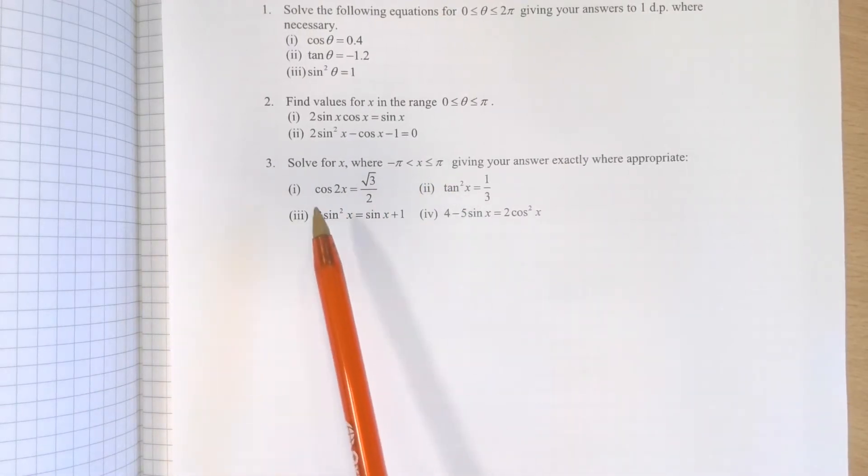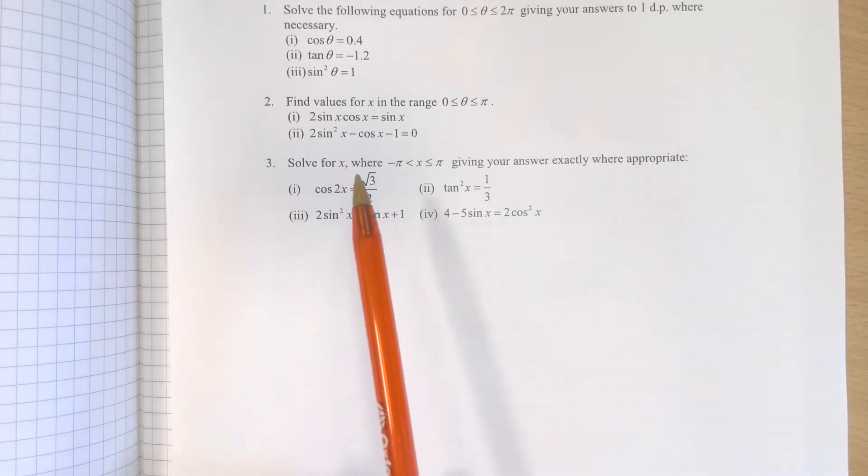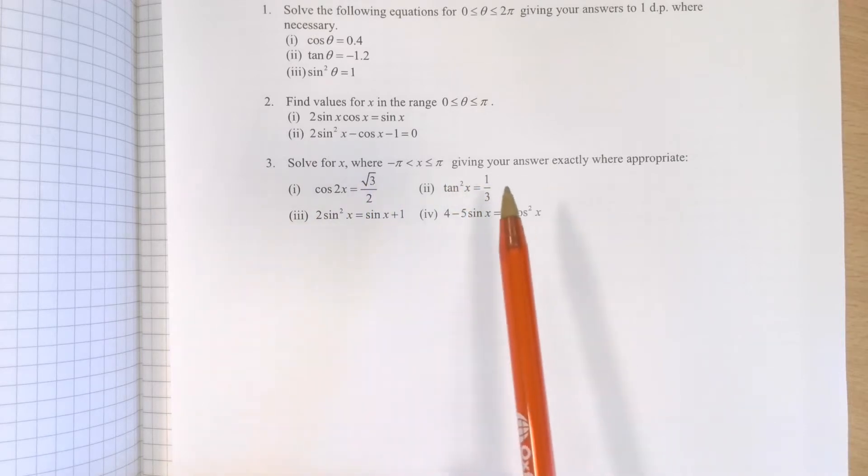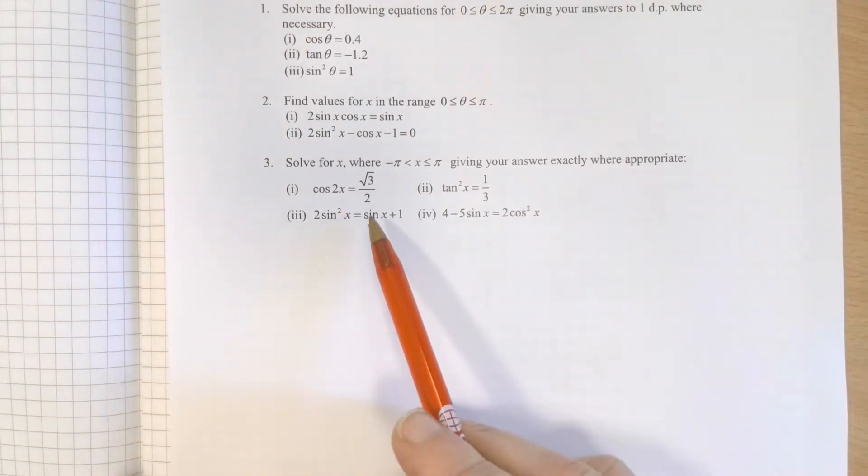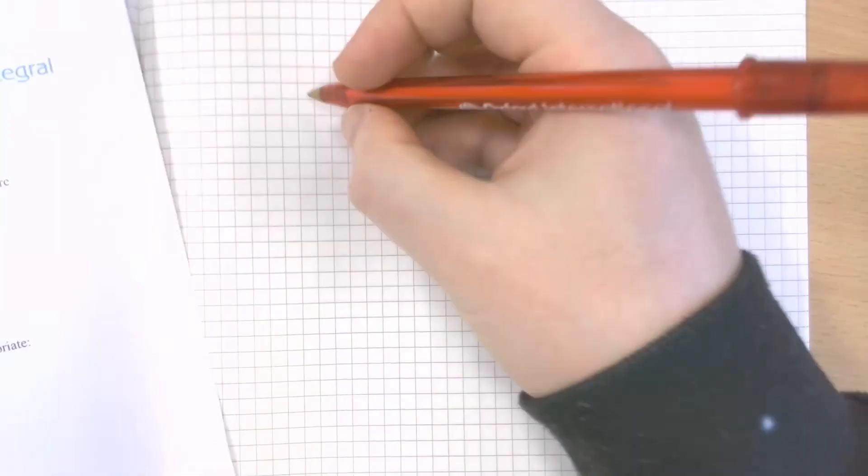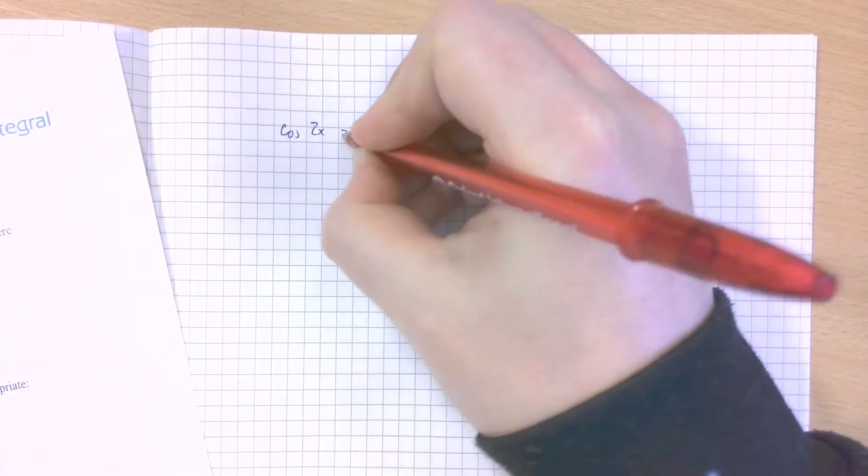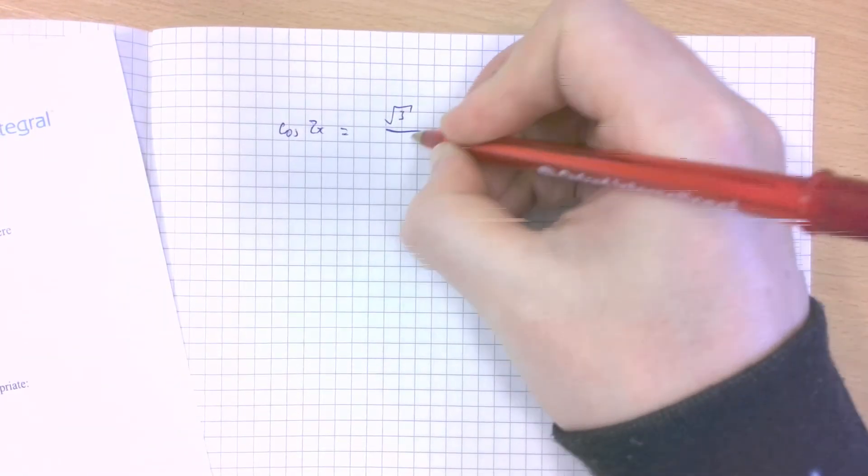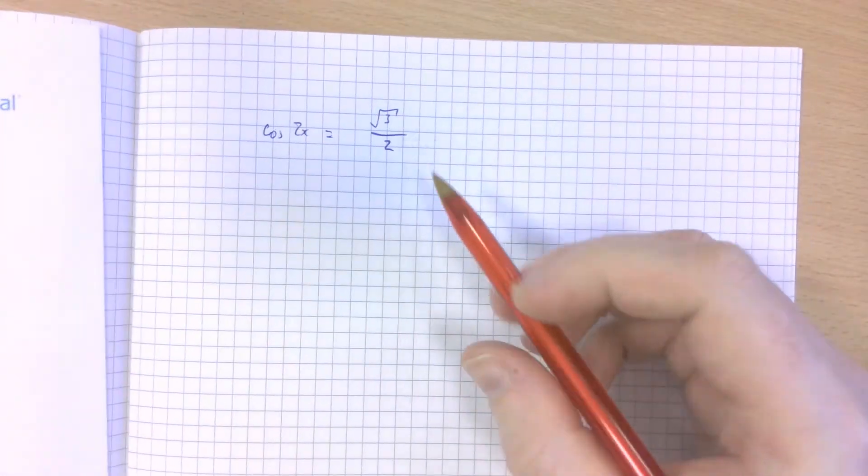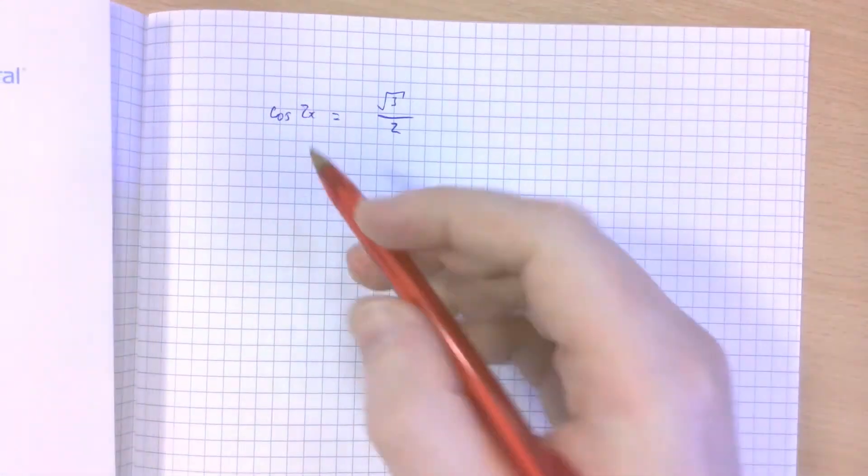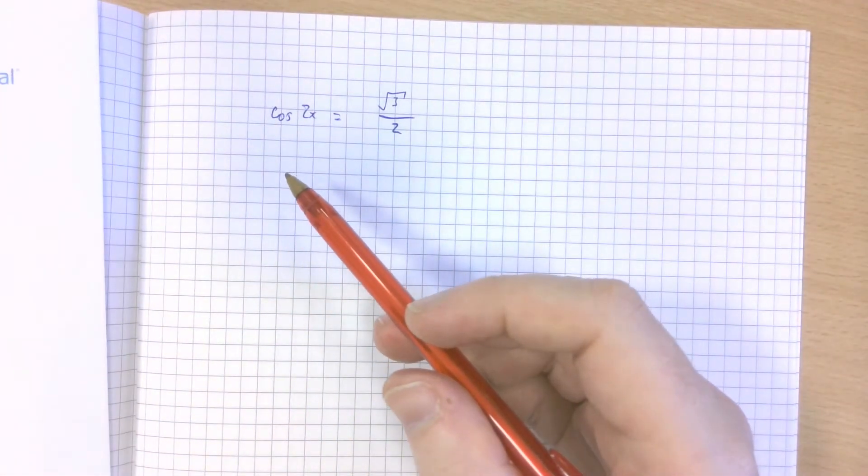Let's take a look at this first part of question 3. Solve for x, where x is between negative π and positive π radians, giving your answer exactly where appropriate. The first part: cos 2x equals √3 over 2. Let's write that up. So I'm dealing with the graph of cos here.